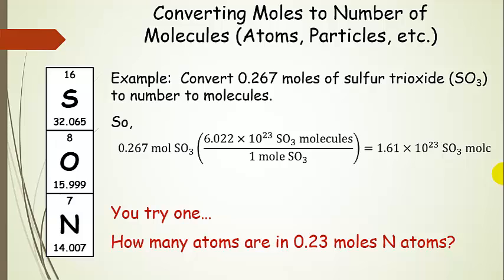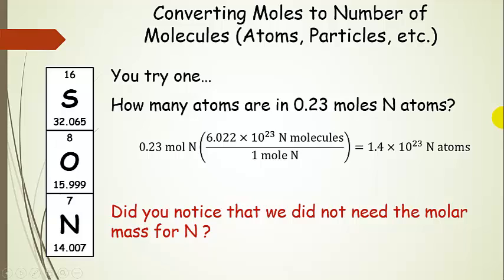Now you try one: how many atoms are there in 0.23 moles of nitrogen atoms? We have our 0.23 moles and we use Avogadro's number as a conversion factor — one mole of nitrogen has 6.022 times 10 to the 23rd nitrogen atoms. We multiply that out and get a number smaller than Avogadro's number because we only had 0.23 mole. Notice that we didn't need the molar mass for nitrogen. You never need the molar mass for going from moles to number of molecules — all you need is Avogadro's number. That's our bridge between moles and numbers of molecules.